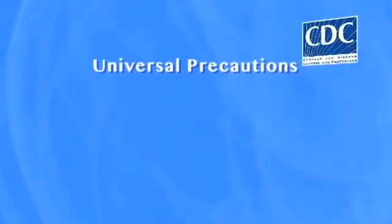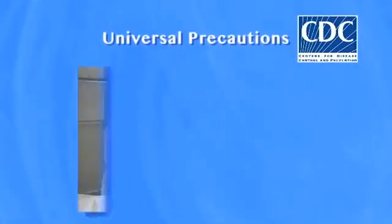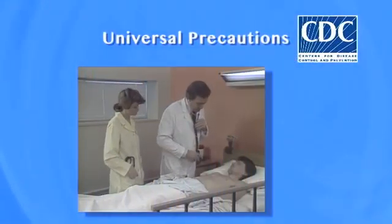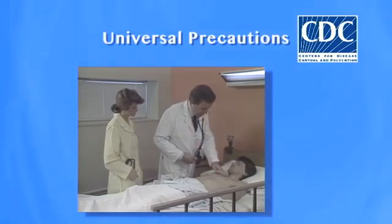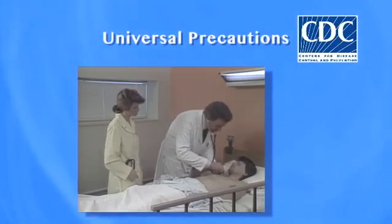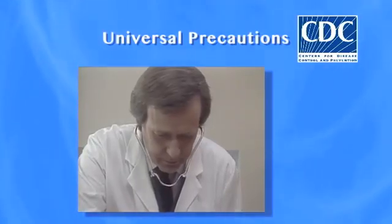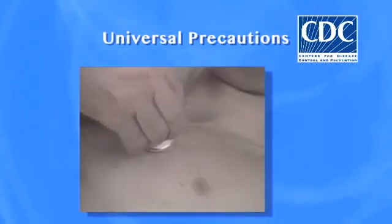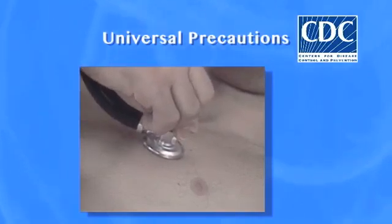Universal Precautions were announced by the CDC in 1987 in response to the HIV epidemic. In essence, these guidelines state that health care providers must treat all blood and bodily fluids as if they were infected with HIV, one of the hepatitis viruses, or other pathogens.